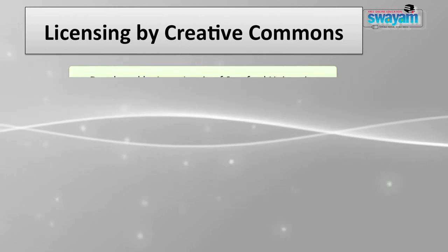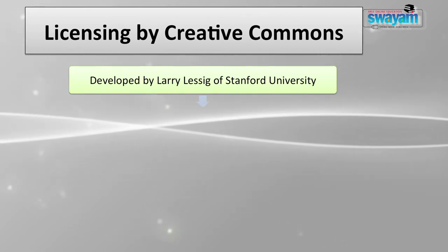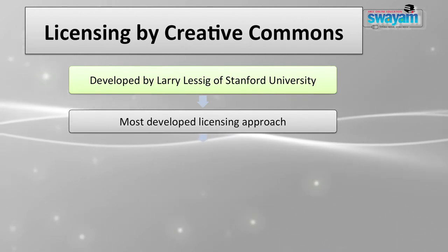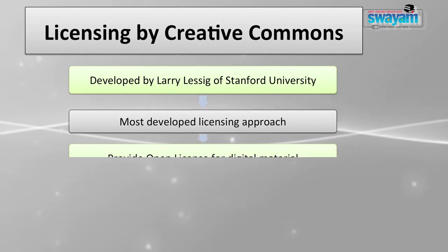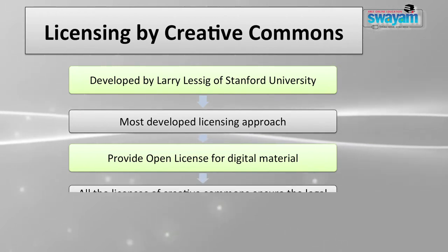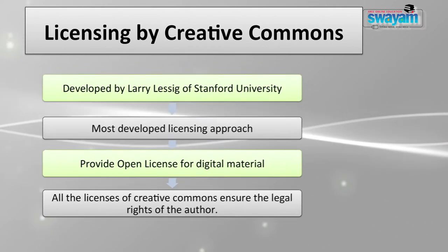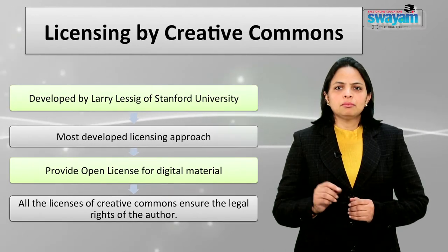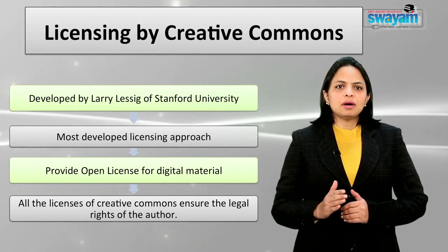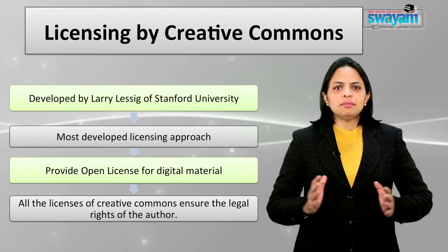The attention of the online learning community is now on licensing by Creative Commons and its availability of various sets of options. Licensing by Creative Commons is the most developed licensing approach among the people. It was developed by Larry Lessig of Stanford University in 2001. It provides open licenses for digital material in a user-friendly manner and avoids copyright restrictions. Creative Commons were launched in 2002 and by the year 2006, 45 million web pages had been licensed with Creative Commons. Inspired by the free software movement, Creative Commons believes that a large, vibrant public domain of information and content is a prerequisite to sustain creativity.